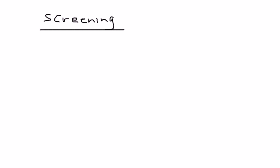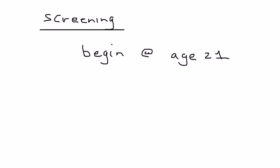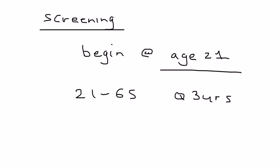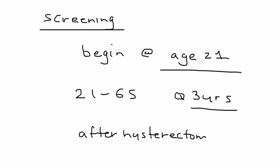Now let's talk about screening guidelines — when you should do it. The cervical cancer screening recommendations have changed many times. The current recommendation in North America is to begin at age 21, regardless of sexual activity. From age 21 to 65, do a pap smear every three years. After a hysterectomy, a pap smear is no longer needed because the cervix is gone.